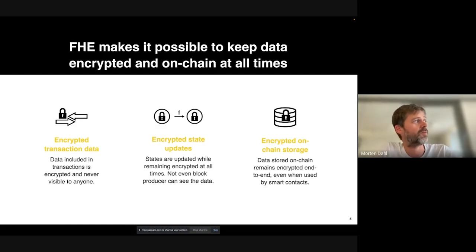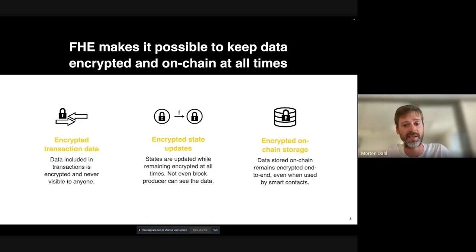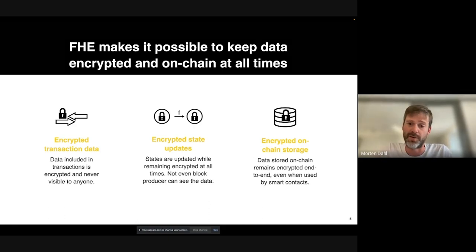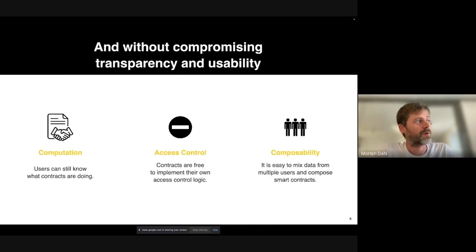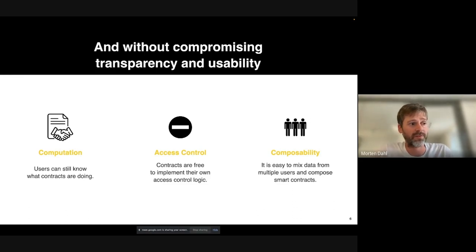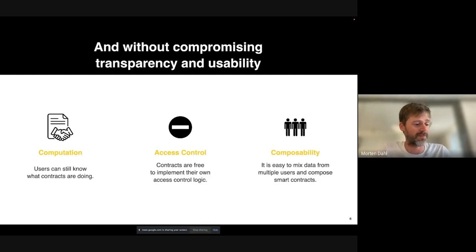What fully homomorphic encryption does for the blockchain is that it allows users to encrypt their inputs and send them to the blockchain without being able to decrypt. The blockchain can process on this data, including existing state, without being able to decrypt it. We can also store the data on-chain, so you don't need to keep a copy of the plaintext data on the side for processing — you can really do all this stuff on-chain. We designed this in a way where we don't have to compromise on some important things. We're not trying to hide the computation that's actually going on, so you can still see the logic of the smart contracts and what you're engaging with.